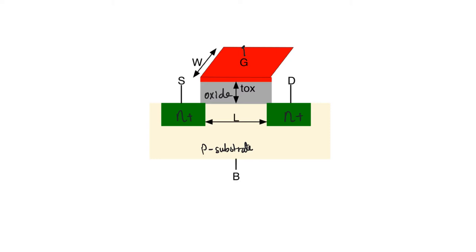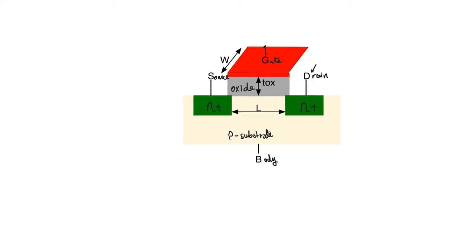This is different from the bipolar junction transistor where the emitter and the collector were different. We call one terminal the drain (D) and the other the source (S). The top terminal of the capacitor is called the gate and the bottom terminal is called the body. The drain and the source form p-n junctions with the body, and for proper operation these p-n junctions must always be reverse biased, so the body should be connected to the lowest potential in the circuit, which is usually ground.